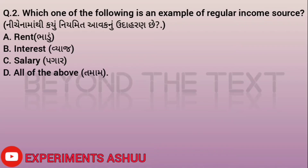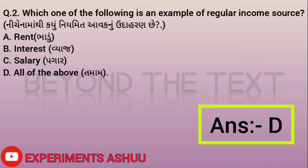Question two: Which one of the following is an example of a regular income source? A - rent, B - interest, C - salary, D - all of the above. Regular income sources have a definite time period. Rent has a definite period, interest has a definite period, and salary comes every month. So our answer is D, all of the above.